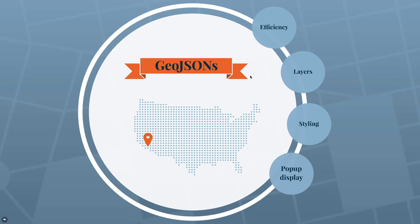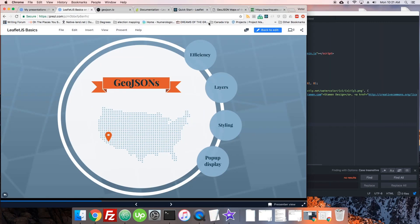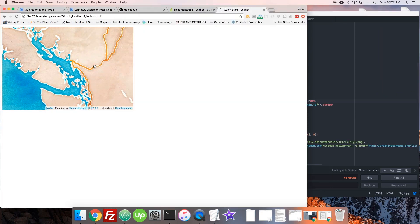In Leaflet, GeoJSONs are essentially layers — each GeoJSON is a different layer you can add and remove from the map quite easily. You can style them individually, and you can even style the features inside each GeoJSON individually depending on their properties. You can also attach pop-ups, add markers, and do all the normal things you'd hope to do with other mapping tools.